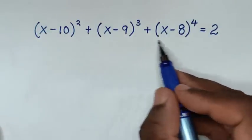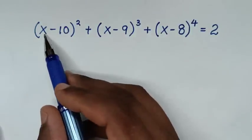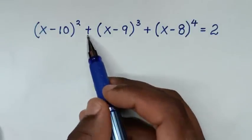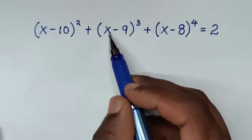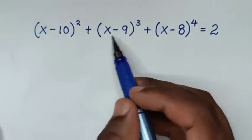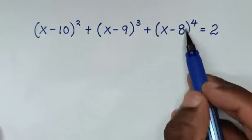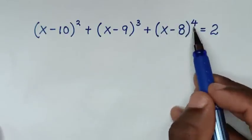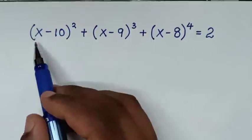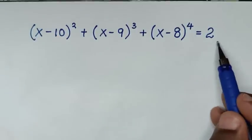You are welcome to solve this math problem, which is (x minus 10) bracket power of 2 plus (x minus 9) bracket power of 3 plus (x minus 8) bracket power of 4 is equal to 2. To find the values of x from this equation.